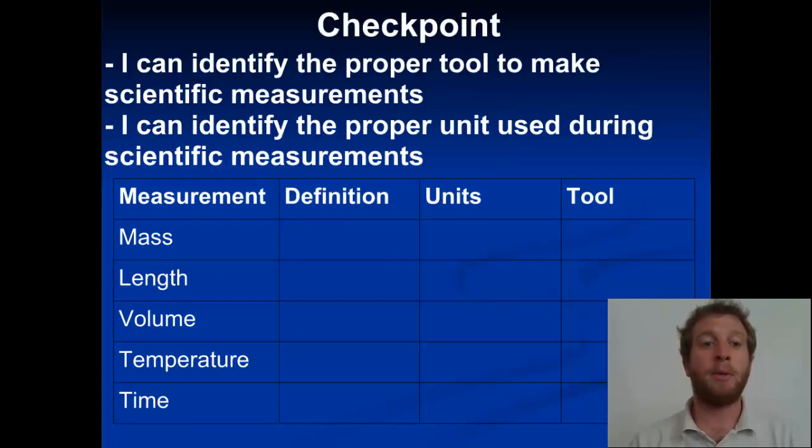Checkpoint. Remember, our two learning targets. You have to be able to identify the proper tool to make scientific measurements. And the proper unit to use science measurements. So what I want you guys to do, you'll be asked to do this in class when we get in, is you'll have to be able to fill out a table that looks just like this. So for your mass, remember that's like the amount of space, or sorry, the amount of stuff that an object has. We measure it in grams. And we would use a scale to measure that. So you should be able to match all those different parts for each of the measurements.